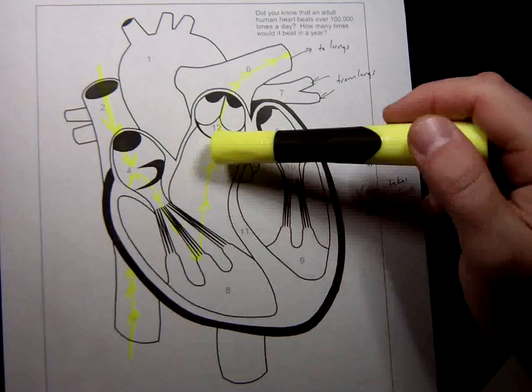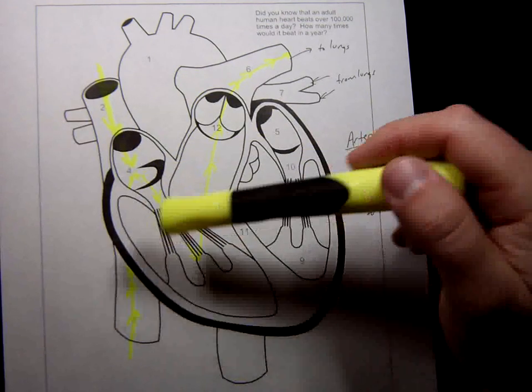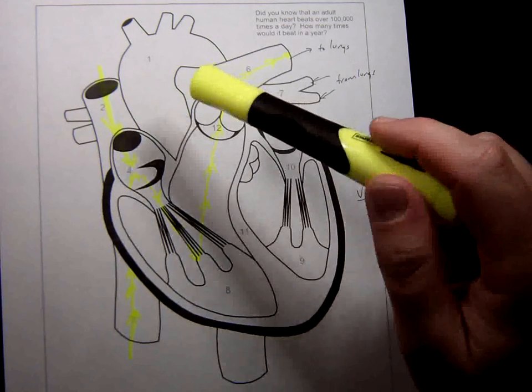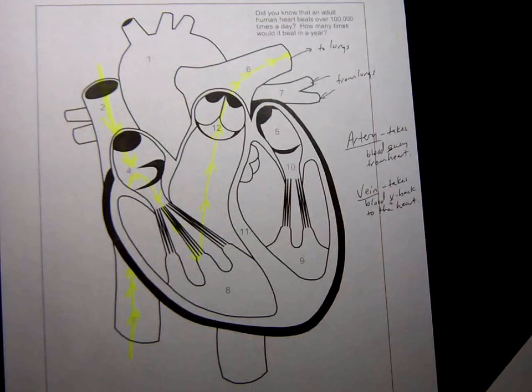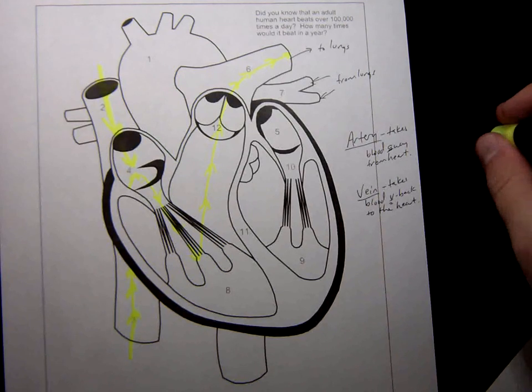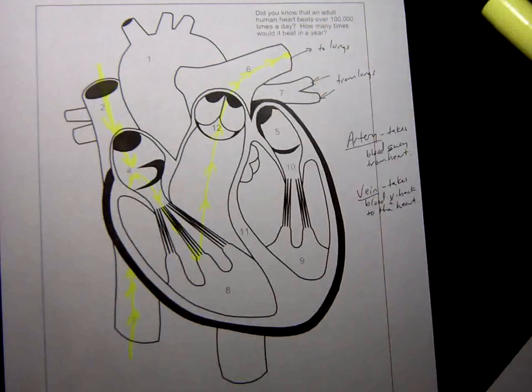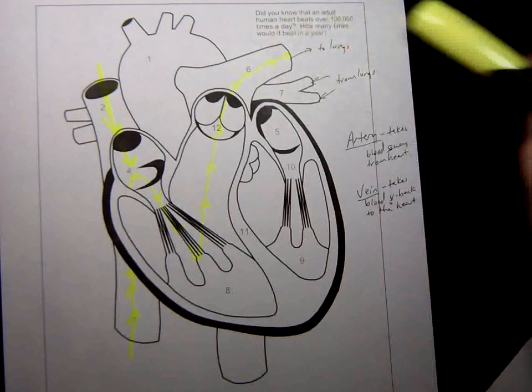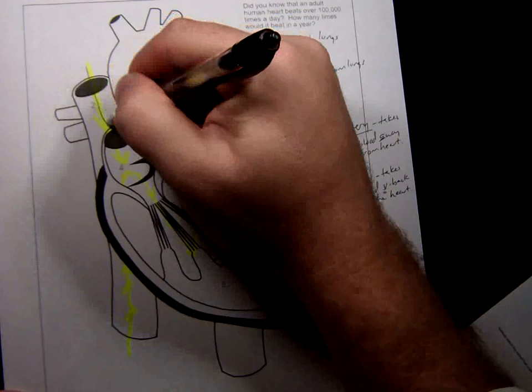So again, recap so far: vena cava, right atrium, tricuspid valve, through the right ventricle, up through the pulmonary semilunar valve, up to the lungs through the pulmonary artery. Now folks, the blood on this side of the heart is deoxygenated. It's already been out to the body. It has already expended all of its oxygen and picked up carbon dioxide. It's headed to the lungs to make a great exchange. All these red blood cells are like, hey, we need oxygen because we've got to pick it up to deliver to the cells. And they're dumping off a ton of carbon dioxide in that area as well.